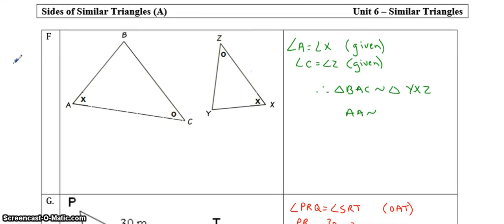For question F, we haven't been given any sides, but we've been given two angles. Since they've put symbols, the reason we know that angle A is equal to angle X, and angle C is equal to angle Z, is because they've been given. So the triangles are similar because of AA. Your order of letters might be different — you might have done A, B, C, but then make sure this would be X, Y, Z. As long as the corresponding letters are in the right spot, that's okay.